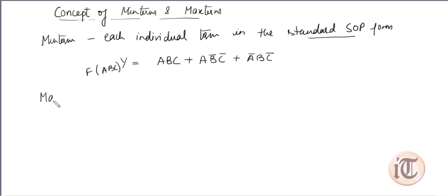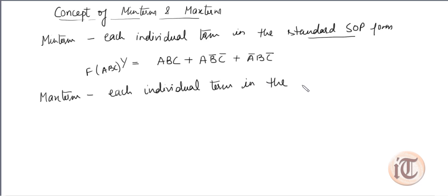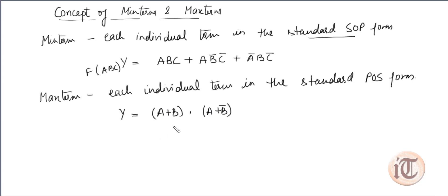Max term is each individual term in the standard POS form. Suppose y = (a + b̄)(a + b). This is a POS form — each is a sum term and we take the product of sum terms. This is a standard POS form because there are only two literals and both literals are present in each sum term. Each individual term such as (a + b) or (a + b̄) is called a max term.